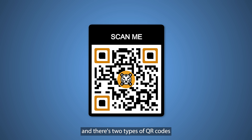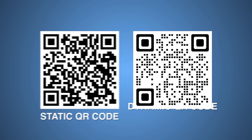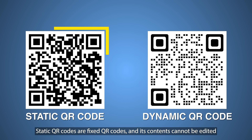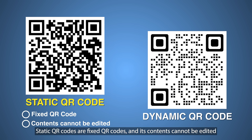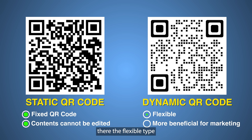There are two types of QR codes: static and dynamic. Static QR codes are fixed and their contents cannot be edited. Dynamic QR codes, on the other hand, are the flexible type.